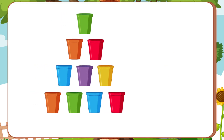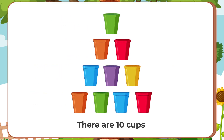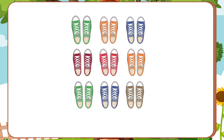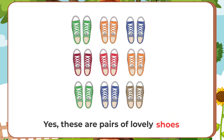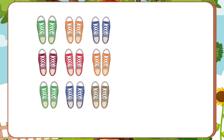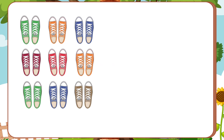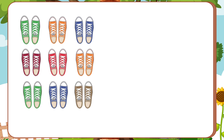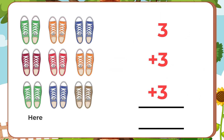So kids, here we can see there are ten cups. Now kids, let's have a look at the next picture. What can we see here? Yes, these are pairs of lovely shoes, right? So let's count how many pairs of shoes are here. Here, see there are three pairs of shoes in each row. So, how we will count here? Three plus three plus three. So there are total nine pairs of shoes here.